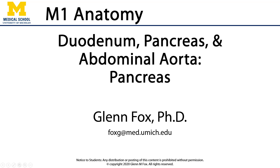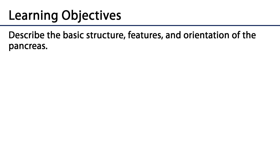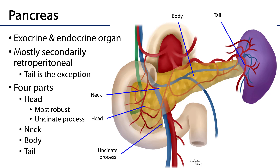Hi, let's talk about the pancreas. In this video we'll discuss the basic structure, features, and orientation of the pancreas. The pancreas is an organ of the foregut. It's predominantly exocrine in nature but it has a very important endocrine function. The islets of Langerhans help to regulate blood glucose levels.